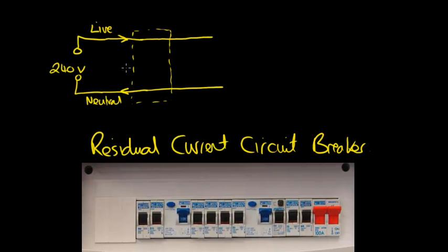If there is a difference in that current then the circuit breaker will switch off - there is a little switch in here - it will switch off the live wire and disconnect the appliance. Now why would there be a difference in the current?